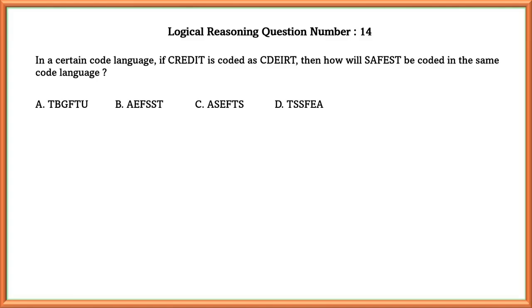Logical reasoning question number 14. In a certain code language, if credit is coded as C-D-E-I-R-T, then how will S-A-F-E-S-T be coded in the same code language? As we can see here, credit is coded as C-D-E-I-R-T. Here, all the letters are arranged in their alphabetical order.